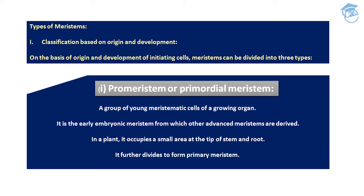On the basis of origin and development, meristems are divided into three types. First is pro meristem, also called primordial meristem. It is a group of young meristematic cells of a growing organ — an early embryonic meristem found in the embryo — from which other advanced meristems can be derived. In the plant, it occupies a small area at the tip of stem and root, and further divides to form primary meristem.